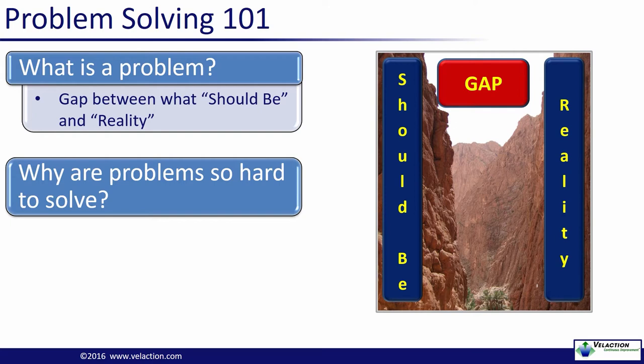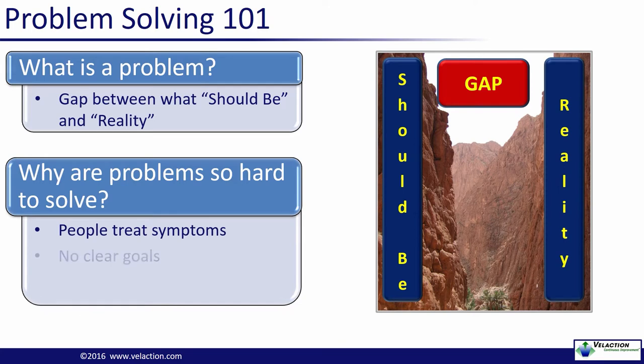Of course, problem solving is easier said than done. Apart from the challenge of clearly defining the should be and reality states, there are several reasons problem solving efforts fall short. The first, and by far the most common, is that people solve symptoms rather than problems. Think of it like treating a cold or the flu with medication, but never washing your hands before eating a meal. You are taking care of the symptoms, but you are doing nothing to prevent future infections. The second reason is that there are often no clear goals. There is no way to judge when, or even if, the problem is solved.